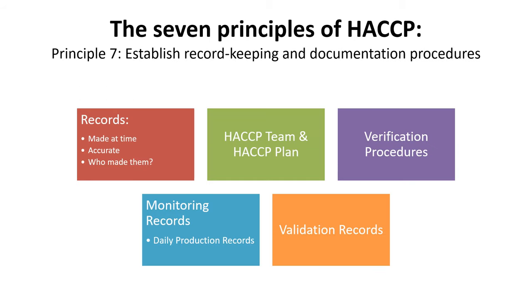And Principle 7: Establish documentation concerning all procedures and records appropriate to these principles and their application. You will determine what records are needed to show that the critical limits have been met and the HACCP system is in control. Address regulatory requirements and include records from the development of the system and the operation of the system. Some of the records to maintain for the HACCP system should include, for example, the HACCP team, HACCP plan, verification procedures, monitoring, validation records, and daily production records.